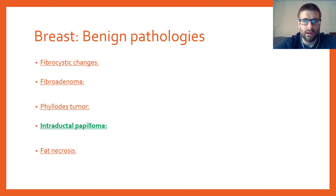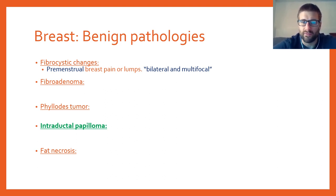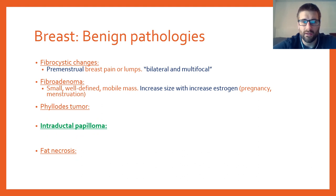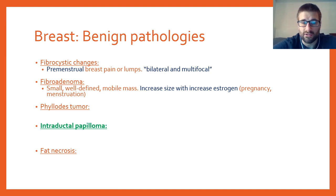Some high-yield breast pathology: Fibrocystic changes occur in pre-menopausal women and present with breast pain and lumps — the buzzword is bilateral focal breast lumps. Fibroadenoma is typically a single small mobile mass that moves freely on palpation. It is estrogen responsive, so it can increase in size during pregnancy or menstruation and then decrease afterward.